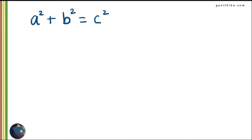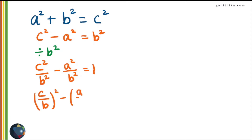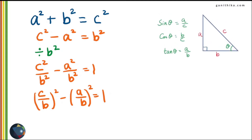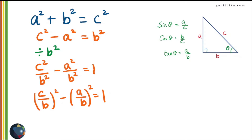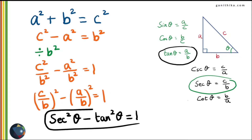Considering the same Pythagoras theorem, rearrange to make B squared the subject and divide throughout by B squared. We get (C/B)² - (A/B)² = 1. Since C over B is secant theta and A over B is tan theta, the identity becomes sec²θ - tan²θ = 1.